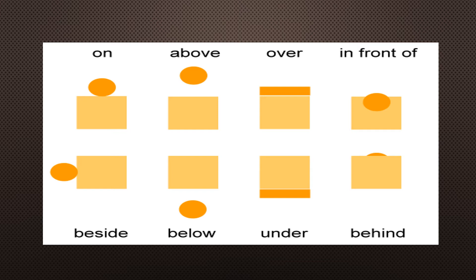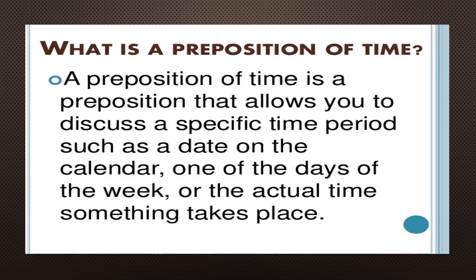Now, this part of speech — preposition — is also of different types. Depending on their usage, let us now discuss the first kind of preposition: Preposition of Time. It allows us to discuss a specific time period, such as a date on the calendar, one of the days of the week, an actual time something takes place, like on, in, at. Look at the examples here.